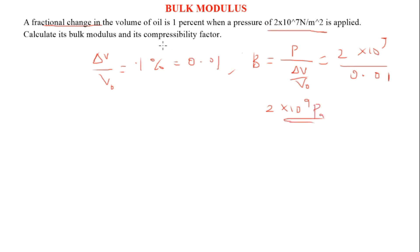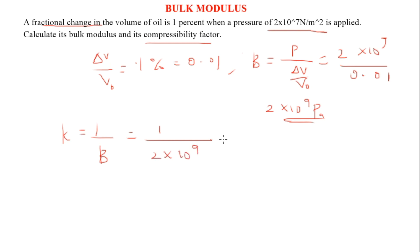The unit is Pascal or Newton per metre squared — they are the same. The question also asks us to find the compressibility factor. The compressibility factor is the reciprocal of the bulk modulus, so compressibility = 1/B = 1/(2 × 10⁹) = 5 × 10⁻¹⁰. If the unit of bulk modulus is N/m², then the unit of compressibility is m²/N.